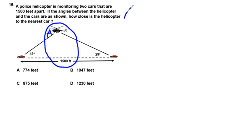is going to be equal to 180 degrees minus angle B minus angle C. So minus angle B is 41 degrees, and minus angle C is 29 degrees.